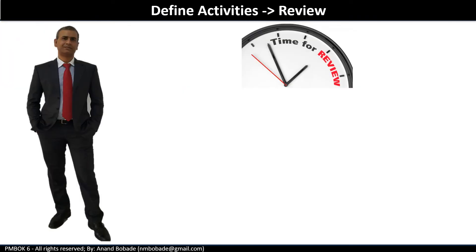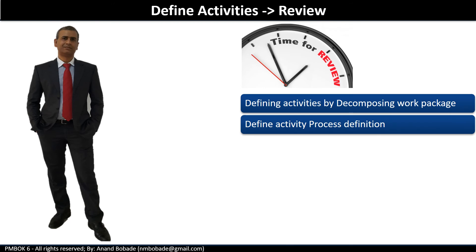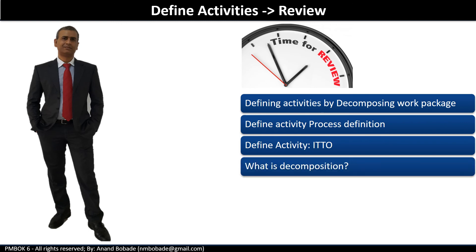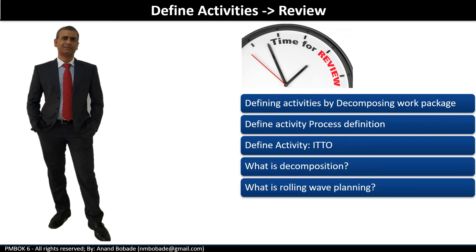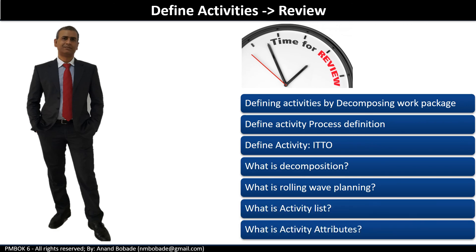Good job — you have completed the define activities process. Let's do a quick review. In the overview, we learned the purpose of the define activities process through a CRM project example. Then we went through the process definition, talked about inputs, tools, techniques, and outputs — including decomposition and rolling wave planning, which are very important — and outputs like activity list and activity attributes. See you in the next session to learn the sequence activities process. Thank you.